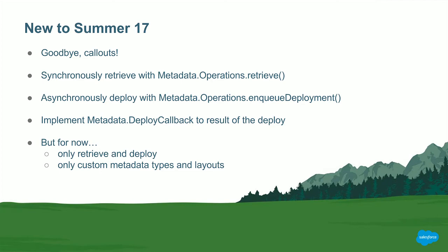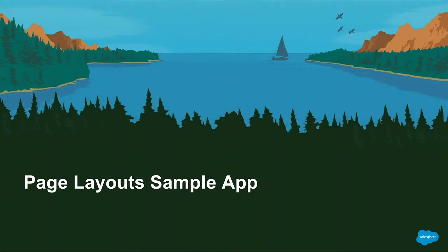If you're only retrieving and modifying page layouts or custom metadata, this is the feature for you — it has everything you need. However, if you want to do anything else, you need to know about the Metadata API callout method, as that's going to be your backup. I'll now pass back to David, who's going to show us a sample app where we illustrate how to use both of those features — something you can all download and try out yourself.